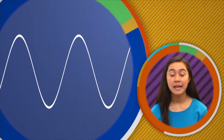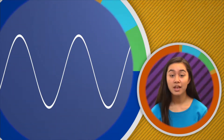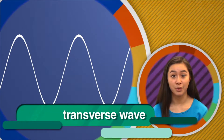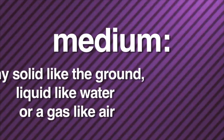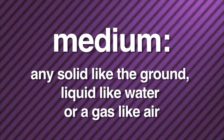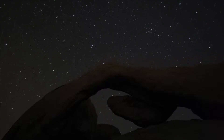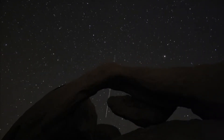If you could see a light wave, it would look something like this. Notice how it goes up and down — this type of wave is called a transverse wave. Light waves are unique because they don't require a medium in order to travel. A medium is any solid like the ground, liquid like water, or gas like air. That's why, even though space is a vacuum with no air, you can see light from stars that are thousands of miles away.